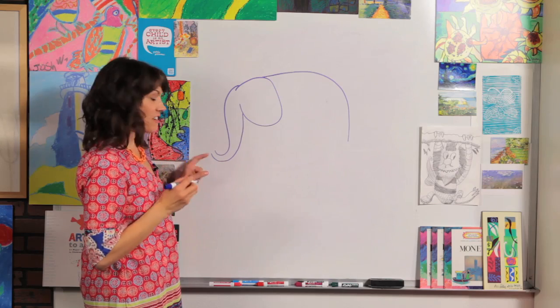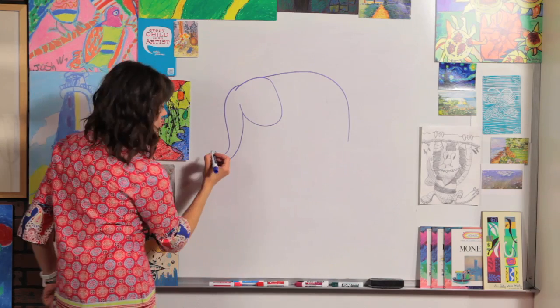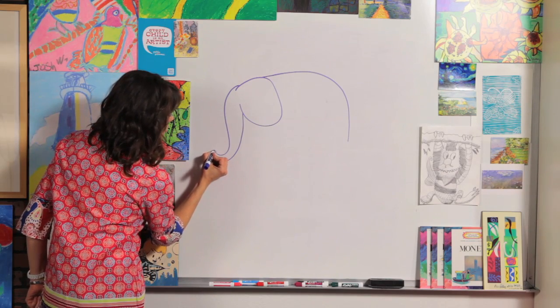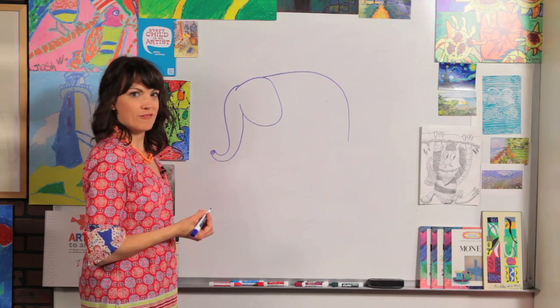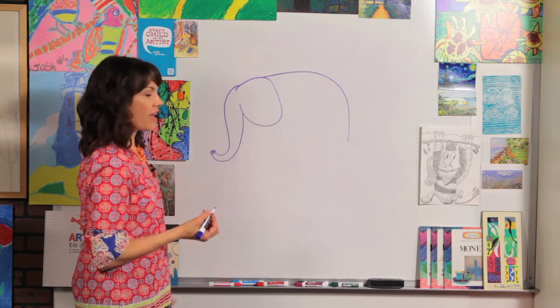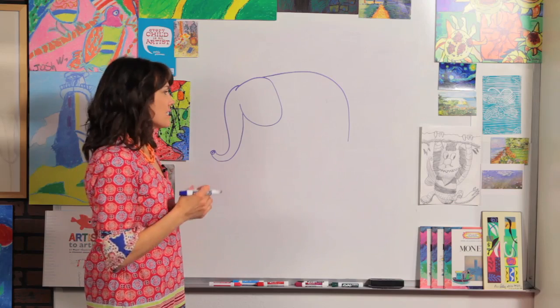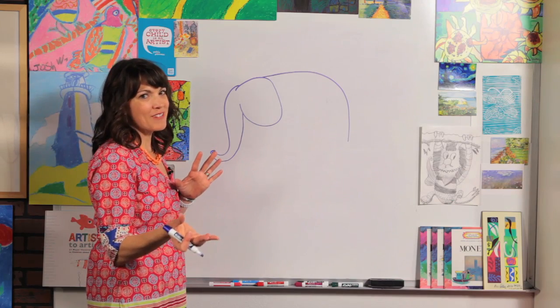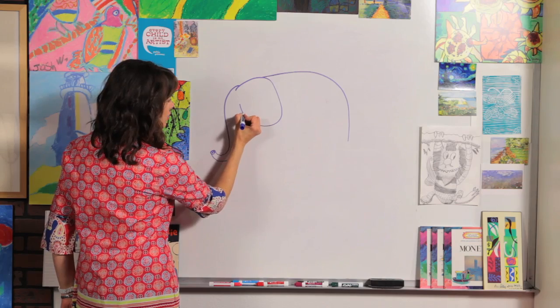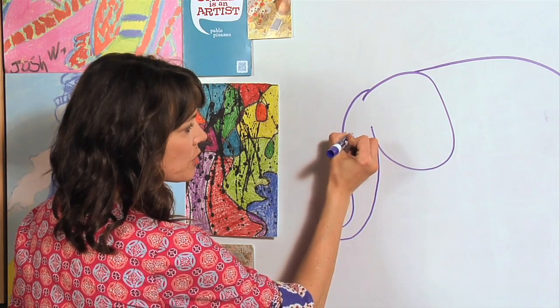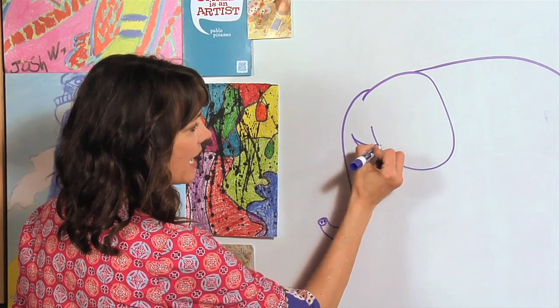Now on the end of this we're going to draw a circle. So let's draw a circle and we're going to draw two dots for his nostrils. Now let's draw a horn too. Some elephants have horns and some don't. Tusks is what they're called on an elephant. We're just going to draw a curved line up to a point and back in.